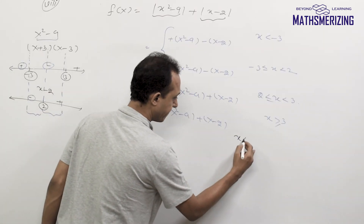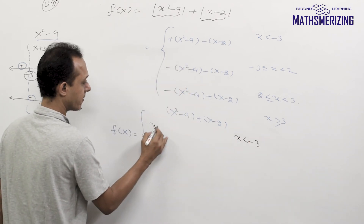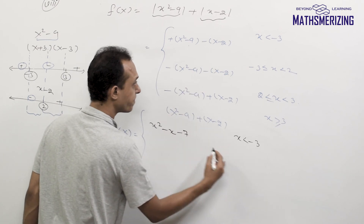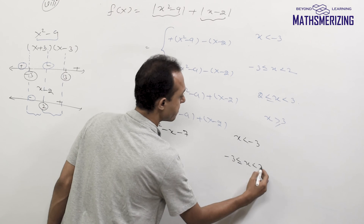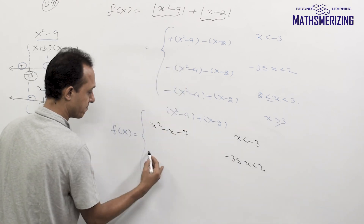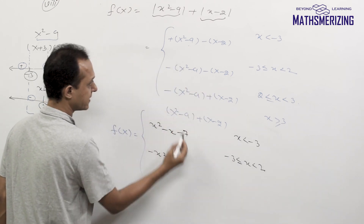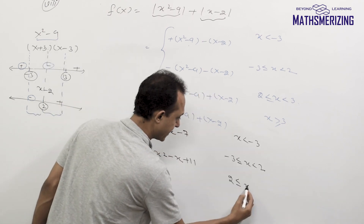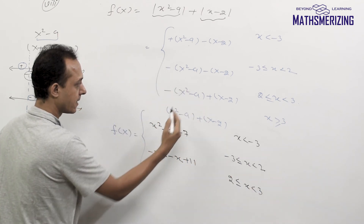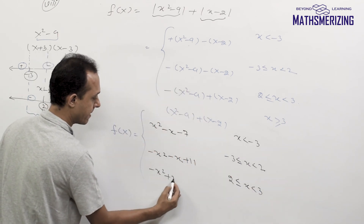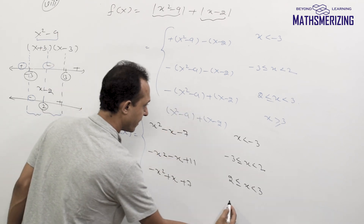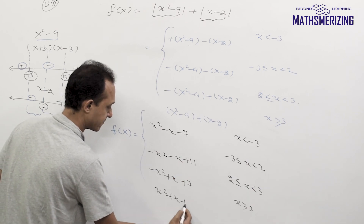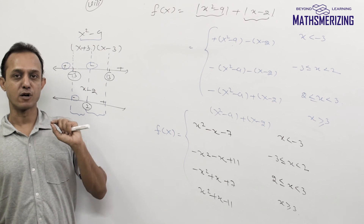Now simplifying f(x) in each interval: when x is less than minus 3, it is x squared minus x minus 7. When x lies between minus 3 and 2, it is minus x squared minus x plus 11. When x lies between 2 and 3, it is minus x squared plus x plus 7. And when x is greater than or equal to 3, it is x squared plus x minus 11. This is how we can write the definition of these functions.